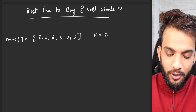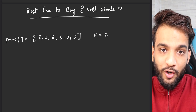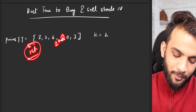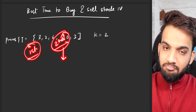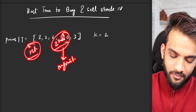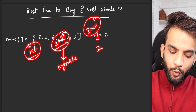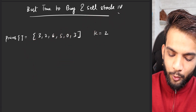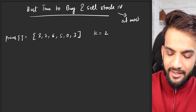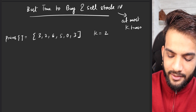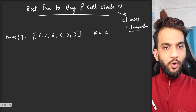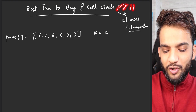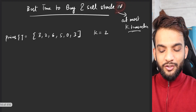Welcome back to Take You Forward - Stocks DP series. In the first problem we did one transaction only, in the second problem we did infinite transactions, in the third problem we did two transactions, and in the fourth problem we are allowed to do at most k transactions. If you're watching this video, please make sure you go and watch stock one, stock two, stock three, and then come and watch stock four.